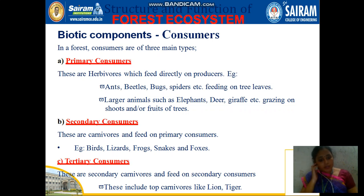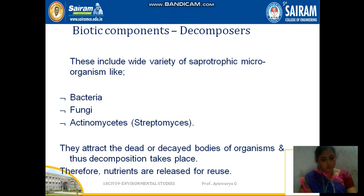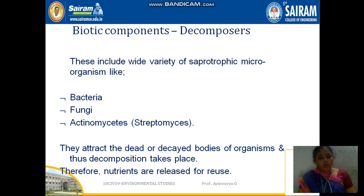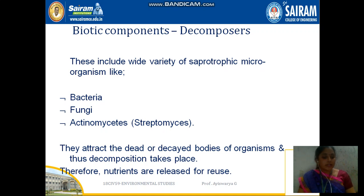So in the biotic components we have primary consumers, secondary consumers, tertiary consumers, and producers. The decomposers include bacteria, fungi, Streptomyces, and Actinomyces. They depend upon dead and decayed organisms — they consume the nutrients available in the dead organisms.